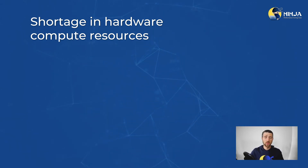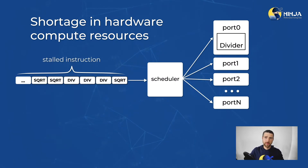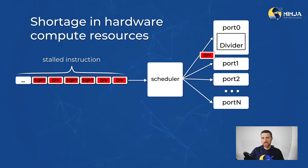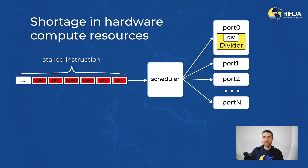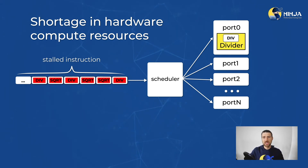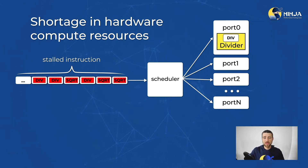This can happen when a workload frequently performs lots of heavy instructions. On this diagram I'm showing one such example. On a Skylake core, division and square root operations are served by the single divider unit, which are dispatched to port 0. If we have many of such instructions, they will queue up while waiting for their turn to be executed, and this will obviously not perform very well. So that was port contention.